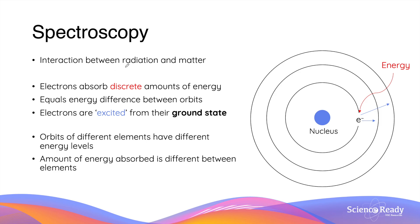Spectroscopy is the interaction between radiation and matter. This is when electrons in an atom can absorb a discrete amount of energy to transition, or to be excited, to a higher energy orbit. The energy being absorbed by the electrons is always equal to the difference in energy between the orbits of transitioning. It's important to remind yourself that orbits of different elements have different energy levels, which causes the amount of energy absorbed by the electrons to be very different between elements.